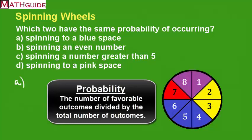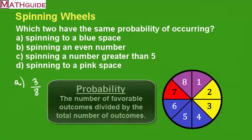And if we ever do spin on a line, it's a re-spin. Keeping that in mind, it looks like there are three blue spaces out of eight total. So there's three favorable outcomes out of eight total possible outcomes. So three eighths looks like it's the correct answer.